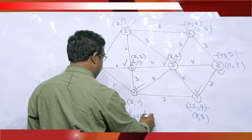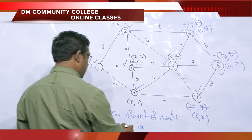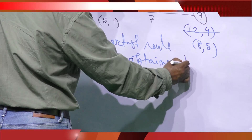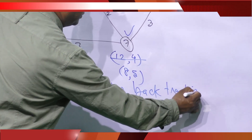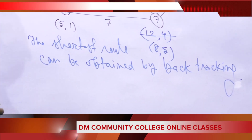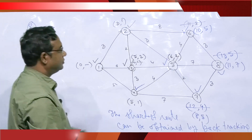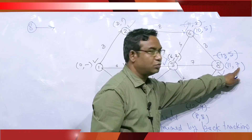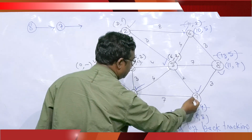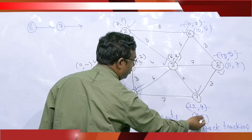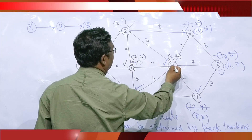The shortest route can be obtained by backtracking. Start from node 8: its label points to node 7. Node 7's label is (8, 5), so go to node 5. Node 5's label points to node 2. Node 2's label points to node 1.